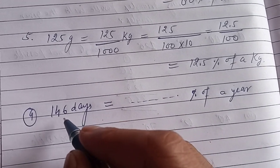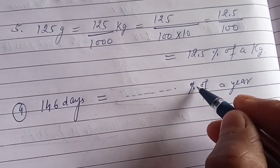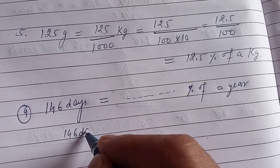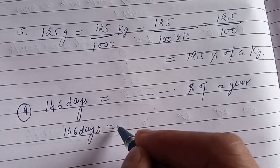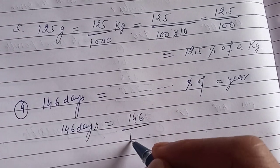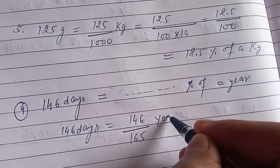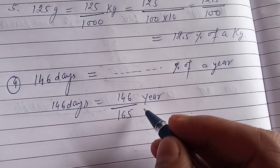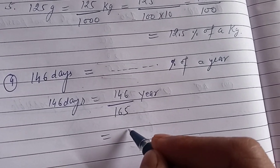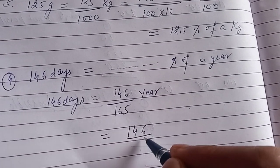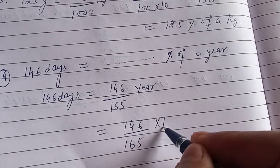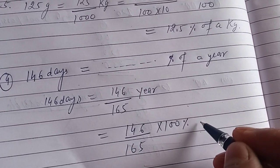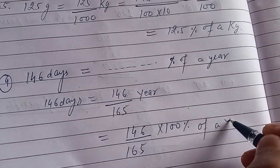Question number 9 diya hai: 146 days equal to blank percent of a year. Isko hum likh sakte hain: 146 upon 365 year. Percentage mein change karne ke liye, 146 upon 365 into 100 kar dijiye — percentage of a year ho jaayega.